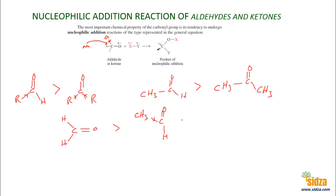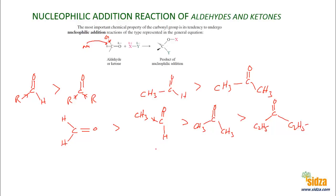Acetaldehyde is more reactive than acetone because acetone has two electron-donating groups. If you replace the methyl groups with ethyl groups, since ethyl is a stronger electron donor than methyl — it has a higher inductive effect — the diethyl ketone would be even more stable and less reactive than acetone. Overall, electron-donating groups decrease the reactivity of aldehydes and ketones towards nucleophilic addition reactions.